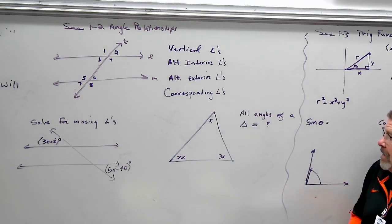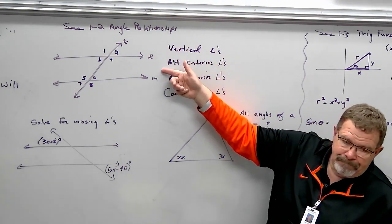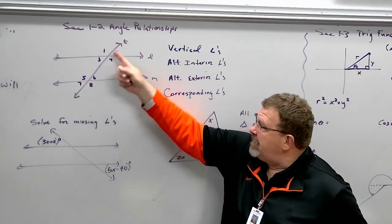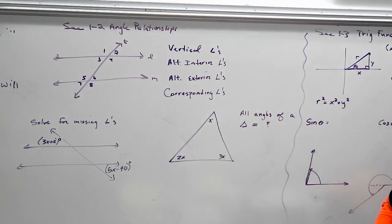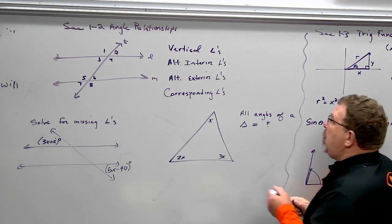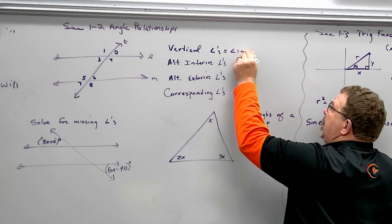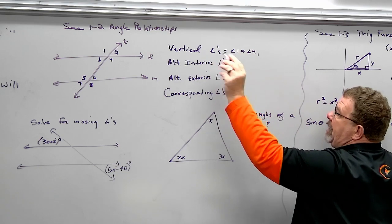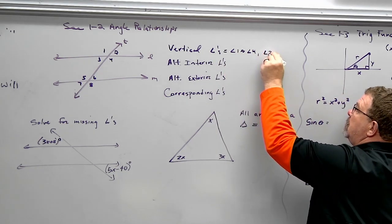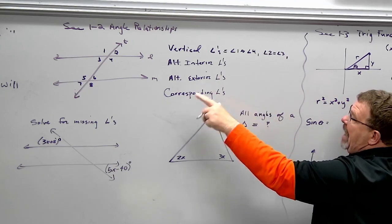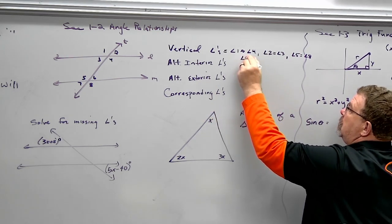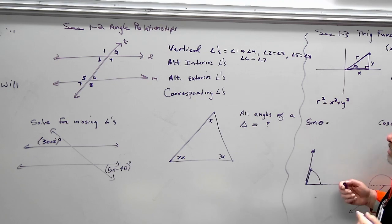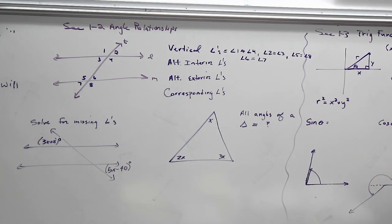Given two parallel lines L and M with a transversal T — a transversal goes through two parallel lines. Looking at vertical angles, if I start at angle one, what would be its vertical angle? Four. So angle one is the same as angle four. Then two is to three, five is to eight, and six to seven. Vertical angles are equal to each other — they're the same angle.